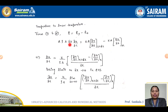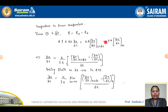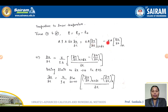Rearranging, keeping ∂u/∂t on the left side, area A cancels, giving ∂u/∂t = (K / rho·S) · [((∂u/∂x) at x + delta x) - ((∂u/∂x) at x)] / delta x. Now take the limit as delta x tends to 0 on the right-hand side.